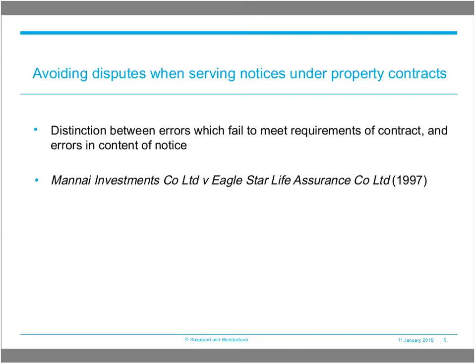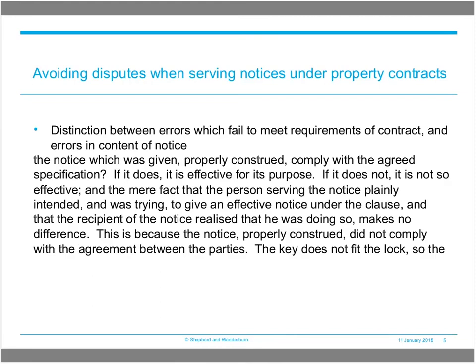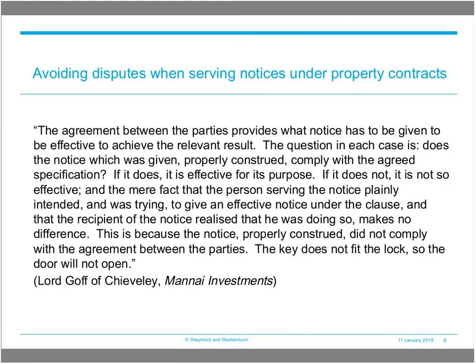As far as the first type of error is concerned — failure to meet the requirements of the contract — Weston-Bartonshire Council is a good example of that. It's worth looking at a couple of quotes from the House of Lords judges in the Manai Investments case. Lord Gough stated: 'The agreement between the parties provides what notice has to be given to be effective to achieve the result. The question in each case is does the notice which was given, properly construed, comply with the agreed specification? If it does, it's effective for its purpose. If it doesn't, it's not. The mere fact that the person serving the notice plainly intended and was trying to give an effective notice, and that the recipient realised that he was doing so, makes no difference. The key does not fit the lock so the door will not open.'